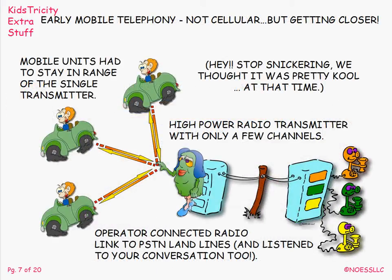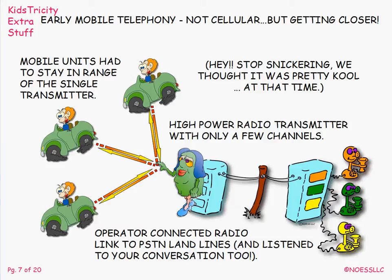Early mobile telephony is not cellular, but it's getting closer. A telephone company had a big honking radio transmitter that could set up a radio link to mobile units and connect that over to a landline subscriber, so you could move around — it was mobile. But you had to stay within range of that single big transmitter, and it took an operator to connect the radio link to the landline link. I used many of these when I first hired on at the phone company in the early 60s. The operator would sometimes listen in on calls. It was a limited system, although it was mobile.